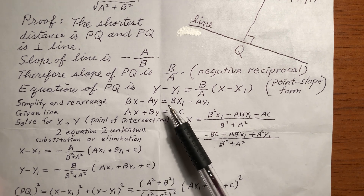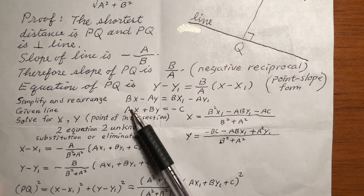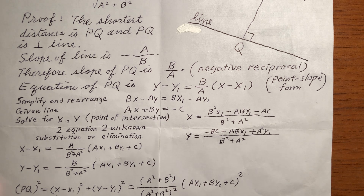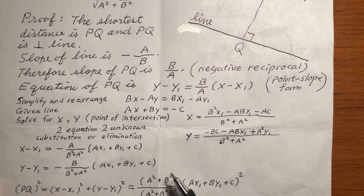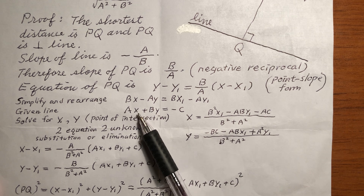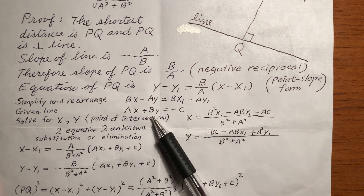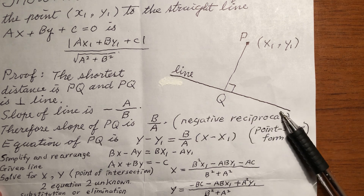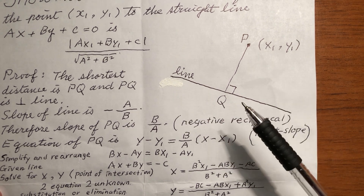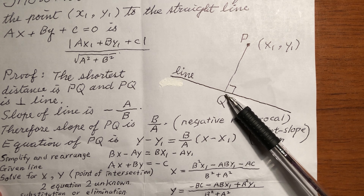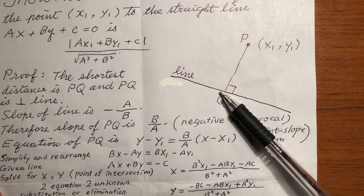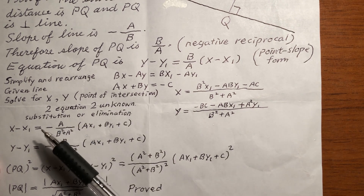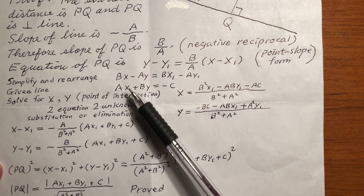Now we have two equations and two unknowns — the two unknowns are x and y. We solve for x and y; the result is the point of intersection. We have these two equations and we solve them — the result is the coordinates of point Q, the point of intersection. You can use substitution or elimination to find x and y.